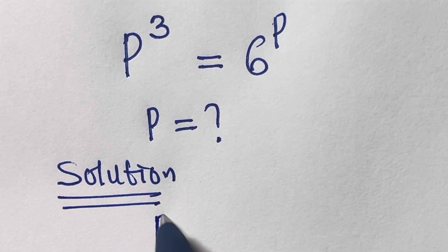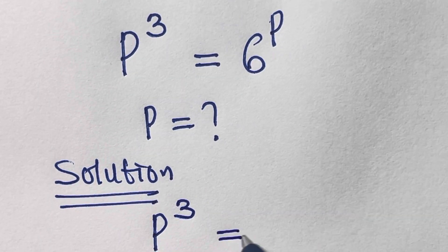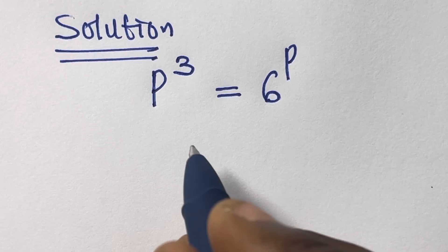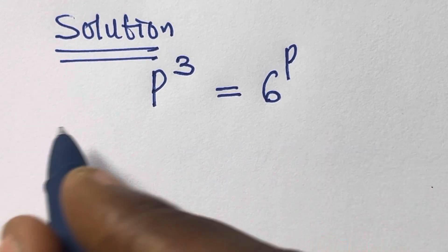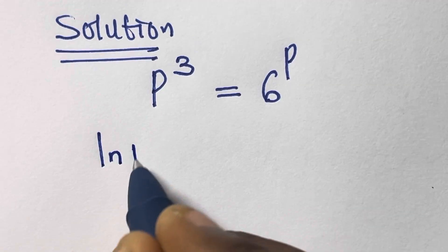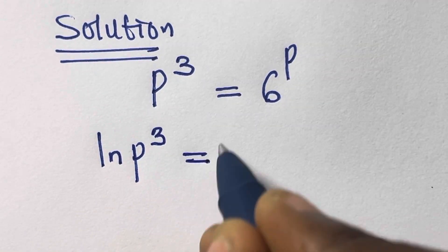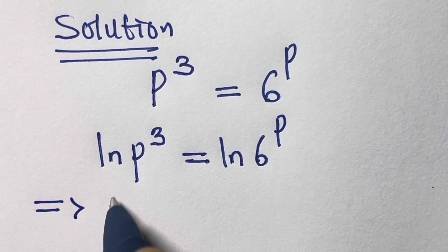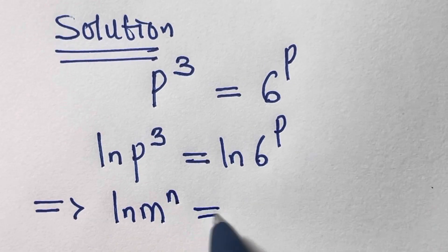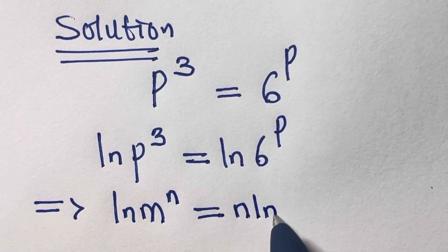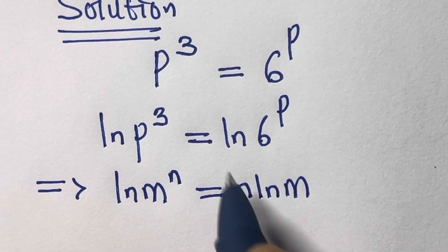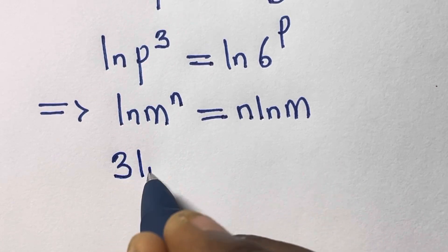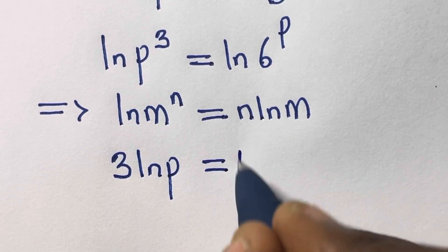Our given equation is p raised to power 3 equals 6 raised to power p. What we need to do first is introduce ln to both sides, so we have ln(p³) equals ln(6^p). Recall that ln(m^n) equals n·ln(m), so applying this we get 3·ln(p) equals p·ln(6).